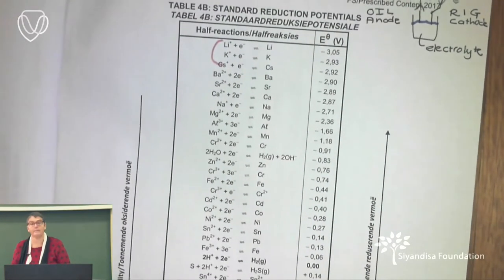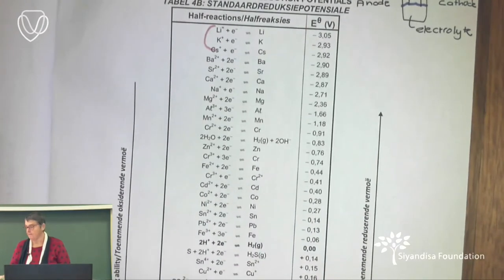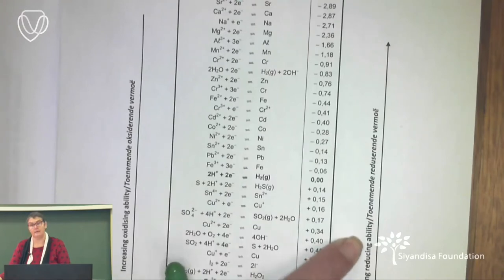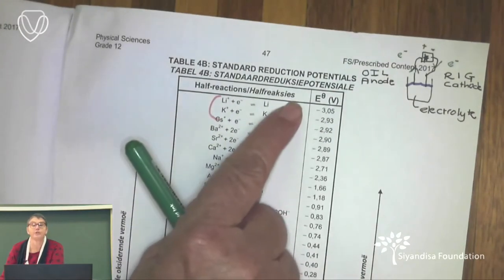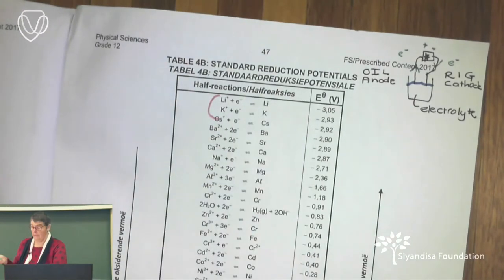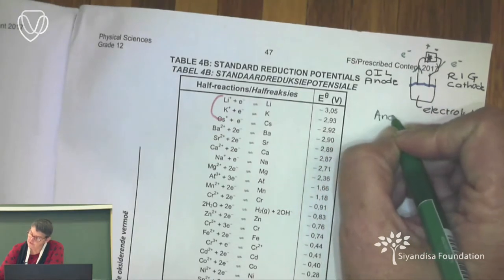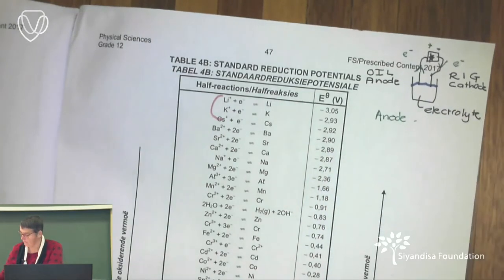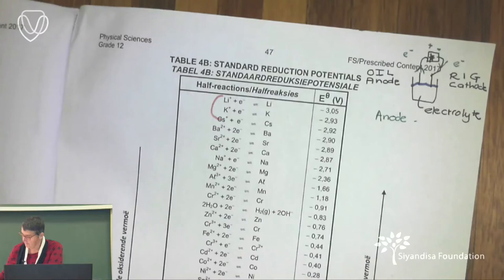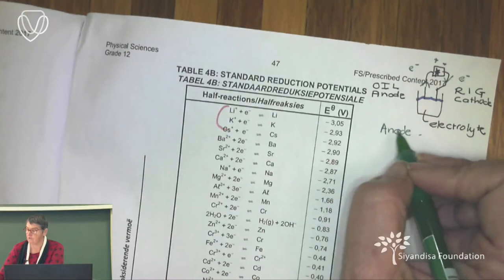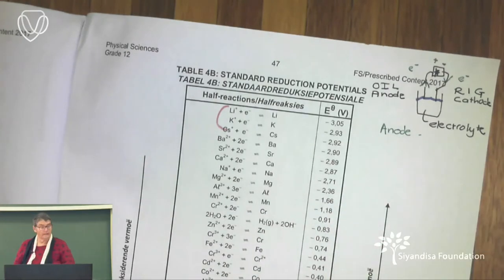The other thing we must know from our table is the increasing reducing ability — as you go up the table, the reducing ability increases. I always also write down 'anode' and 'cathode' on my table, which I'll explain in a while. Now let's have a look at what type of questions we can expect. I've chosen more difficult, unconventional questions.